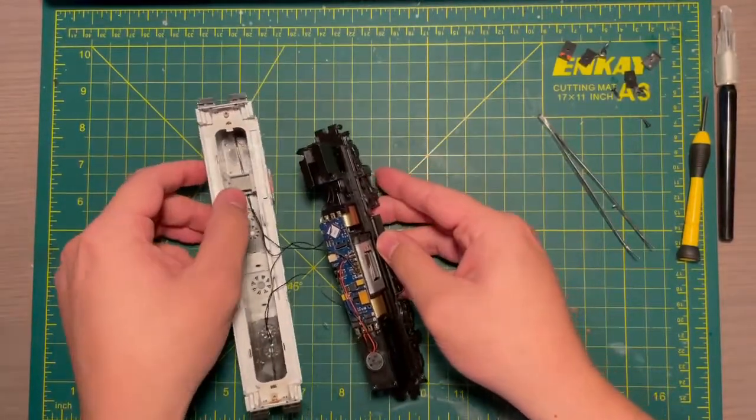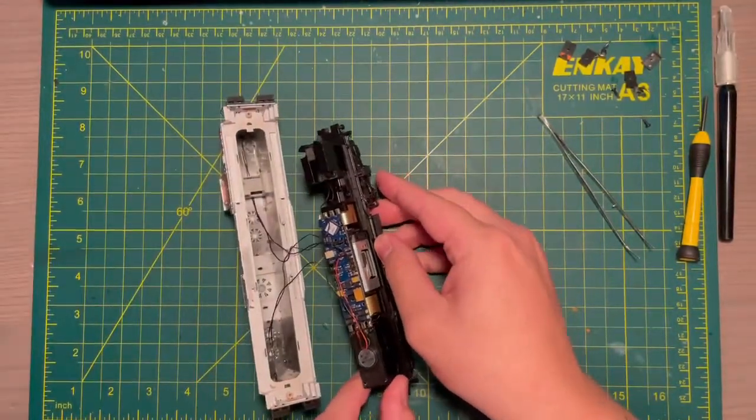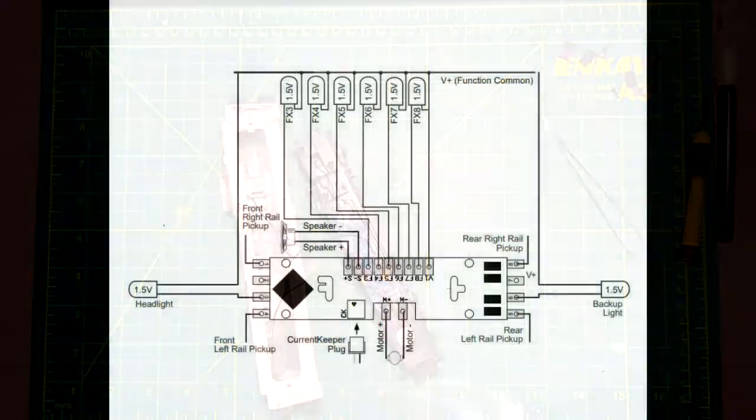As you can tell, this model already has the Tsunami 2 decoder in it, so we are going to be removing it and adding it to the new model.